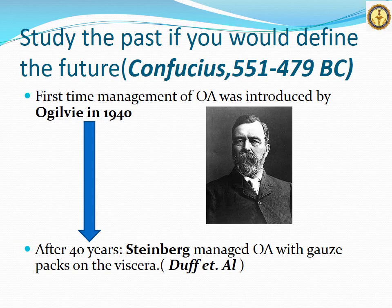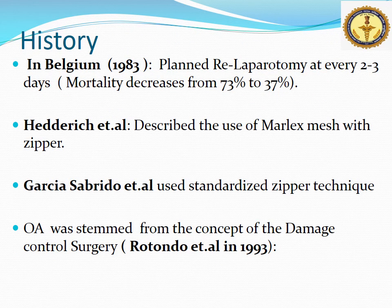The management of open abdomen was first introduced by Oakley in 1940. After 40 years, Steinberg and Dove started managing open abdomen with application of cauze back. Surgeon of Belgium in 1983 adopted primary laparotomy every two to three days and achieved good results, decreasing mortality from 73 to 37 percent. Heitlich et al. described the use of Marlex mesh, and Garcia Sabredo used a zipper technique. In reality, open abdomen stemmed from the concept of damage control surgery introduced by Rotondo in 1993.